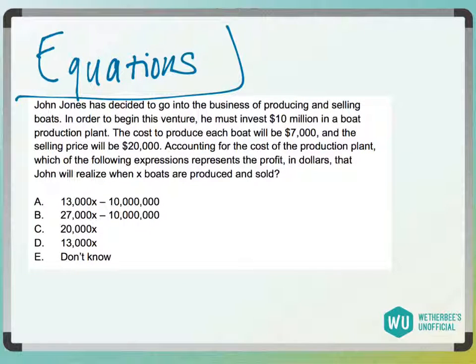Okay, so we have John Jones is going to start some business, and he needs to invest $10 million. This $10 million is what they're going to call a fixed cost.